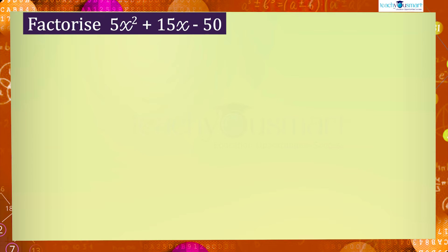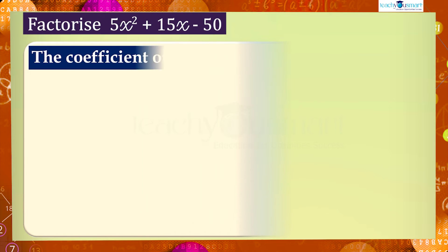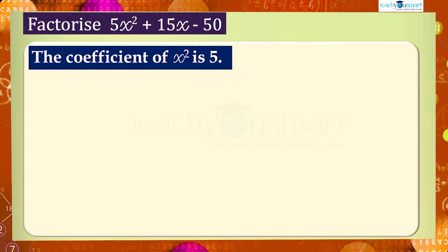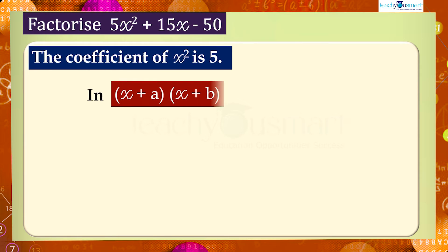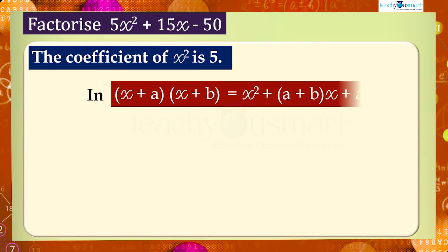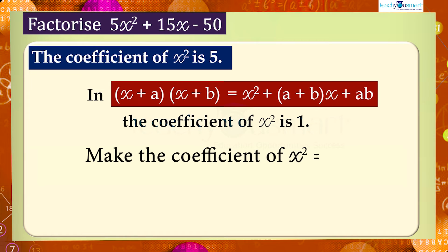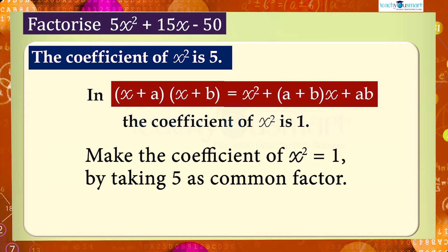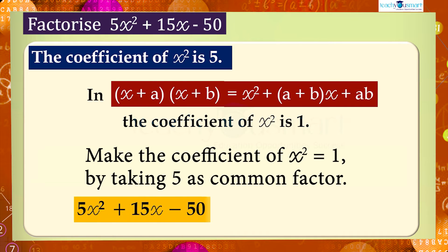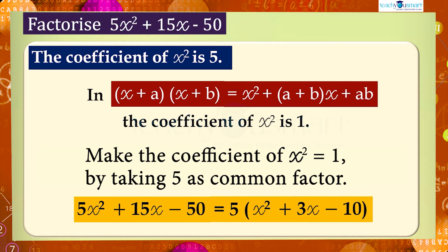Next, factorize 5x² + 15x − 50. Here the coefficient of x² is 5, but in the identity (x + a)(x + b) = x² + (a + b)x + ab the coefficient of x² is 1. So we have to make the coefficient of x² equal to 1 by taking 5 as the common factor. That is, 5x² + 15x − 50 = 5(x² + 3x − 10).